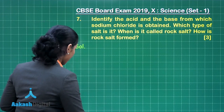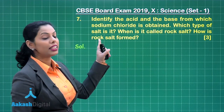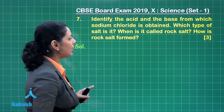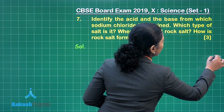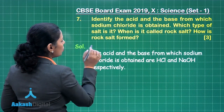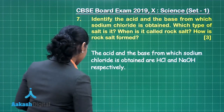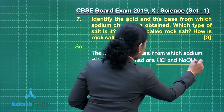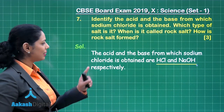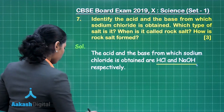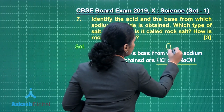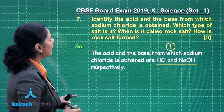The first thing to write is the name of the acid and the base from which sodium chloride is obtained. Sodium chloride is the common salt and it is obtained from HCl and NaOH. The key terms are acid — hydrochloric acid — and base — sodium hydroxide. You will get half mark for each, making 1 mark for this point.